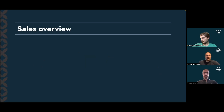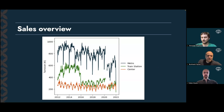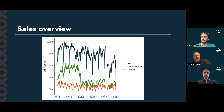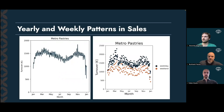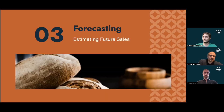From this plot you can already see that turnover differed between the three branches, with most sales occurring at the metro station branch while the smallest turnover was in the city center branch. I'd also like to draw your attention to the break in sales data in early 2020 due to the first Corona lockdown in Vienna. Since the sales profiles changed drastically after the onset of Corona, we decided to only use data up until the end of 2019 for our forecasts. Two seasonalities were striking: a yearly pattern with a dip in sales during summer and winter months, and differences in sales for weekends compared to weekdays.